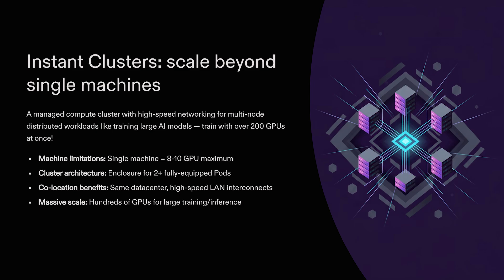Clusters are an extension of the pod architecture. The resources for a pod are limited to what can fit on a single machine, which means 8 to 10 GPUs max. Clusters are a specially configured architecture that acts as a container for two or more fully-equipped pods, which ensures that they all reside in the same data center with high-speed local area interconnects. With clusters, you can instantly spin up a fleet of potentially hundreds of GPUs to run large-scale training or inference tasks that will be way out of scope for a single machine.